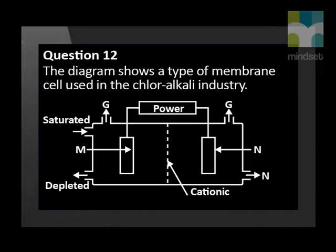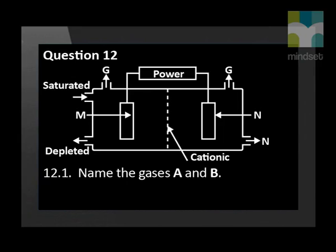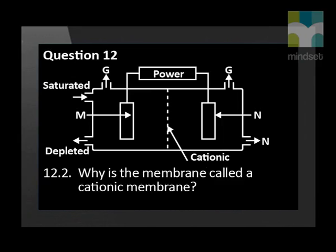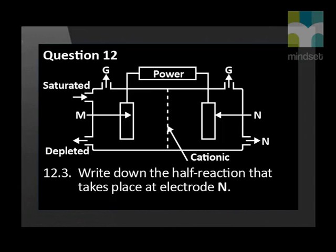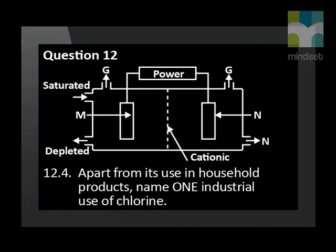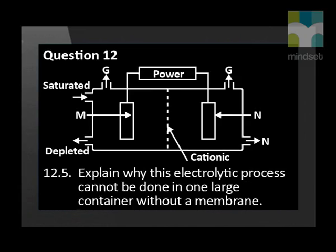The last question deals with the chloroalkali industry. The diagram shows a type of membrane cell used in the chloroalkali industry. Name the gases A and B. Why is the membrane called a cationic membrane? Write down the half reaction that takes place at electrode N. Apart from its use in household products, name one industrial use of chlorine. Explain why this electrolytic process cannot be done in one large container without a membrane.